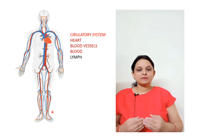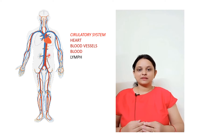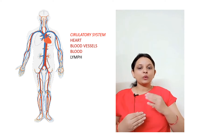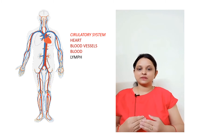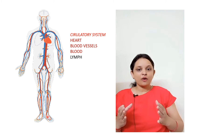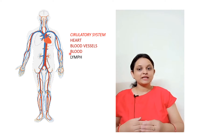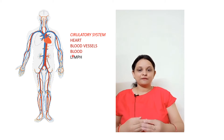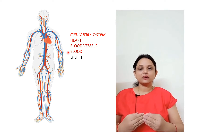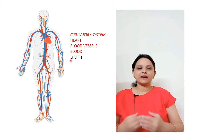Our circulatory system is also called the cardiovascular system or vascular system. In vertebrates, it is a closed kind of circulatory system. It allows fluid to pass through a network of vessels. There are two kinds of fluids: blood and lymph. So there are two types of circulation: the cardiovascular system and the lymphatic system.